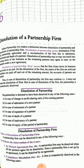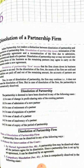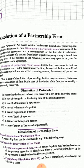Now the modes of dissolution of a partnership firm. First, without intervention of the court — by mutual agreement. If the partners mutually agree to dissolve the partnership firm, then the partnership firm is set to be dissolved.